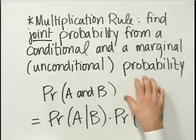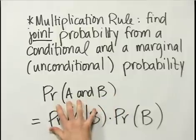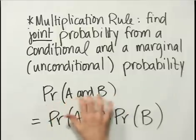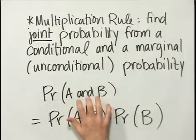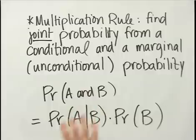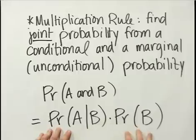In terms of symbols, the probability of A and B — in other words, the joint probability of both events happening — can be found if you know the probability of A given B and the probability of event B. We just multiply those two together.